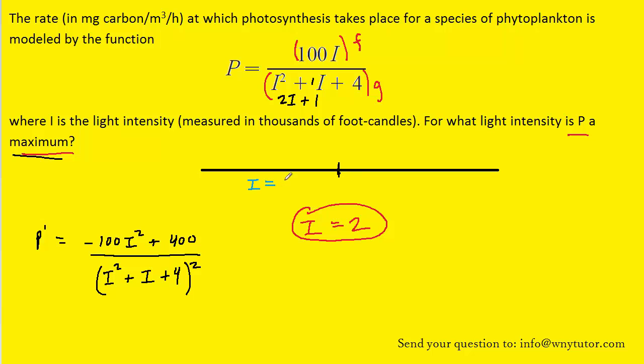We will choose values for I that are both smaller than and larger than our critical value, and we will plug them into the first derivative to see whether they come out positive or negative. For example, when we calculate P prime of 1, we would see that we get a positive result.